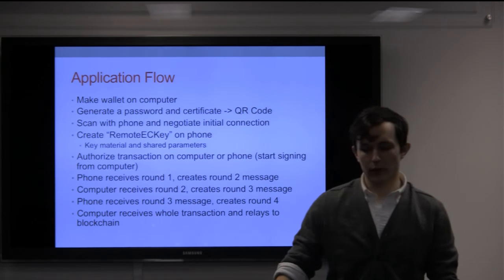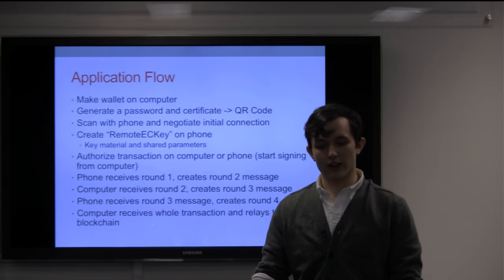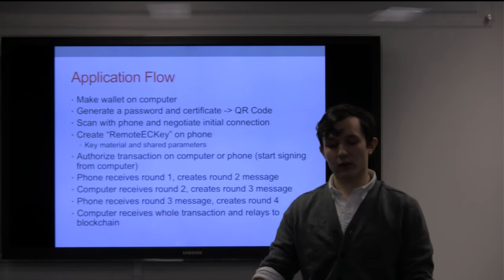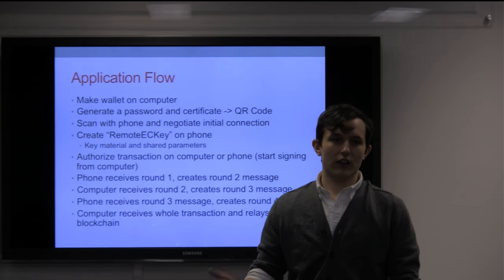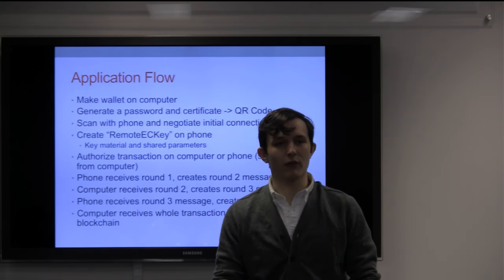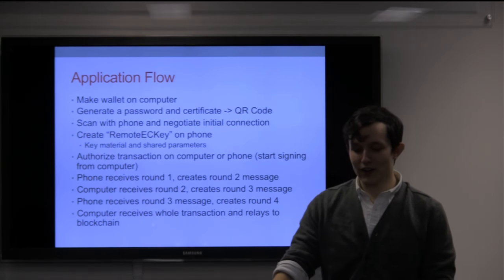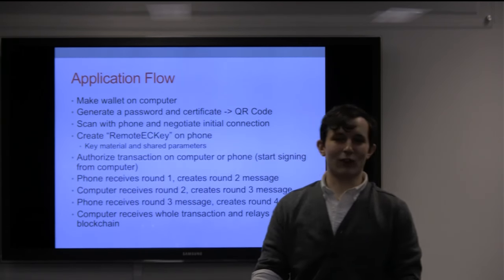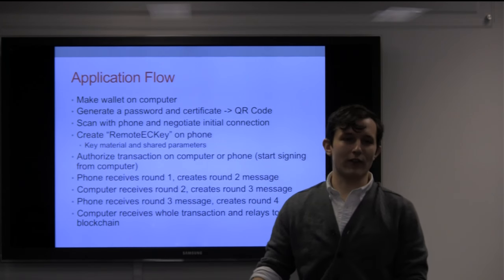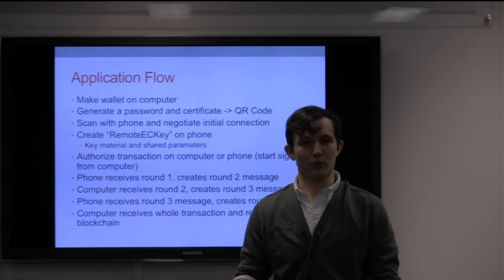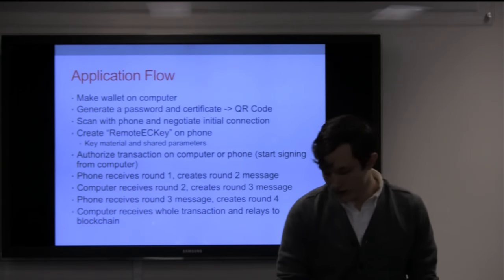The general application flow is that you make the wallet on the computer and that'll make a portion of the key and store the relevant parameters. Generate a password and certificate, put that into a QR code, display that in a multi-bit pane. You'll scan with the phone and then connect over a standard SSL socket to make a remote key and store all the parameters on the phone. Then you'll authorize your transaction on either end. The phone receives the first round that was partially signed by the computer, and it goes back and forth until the computer receives the final round. Then the computer relays the whole signed transaction to the Bitcoin blockchain and it's added once it's mined.